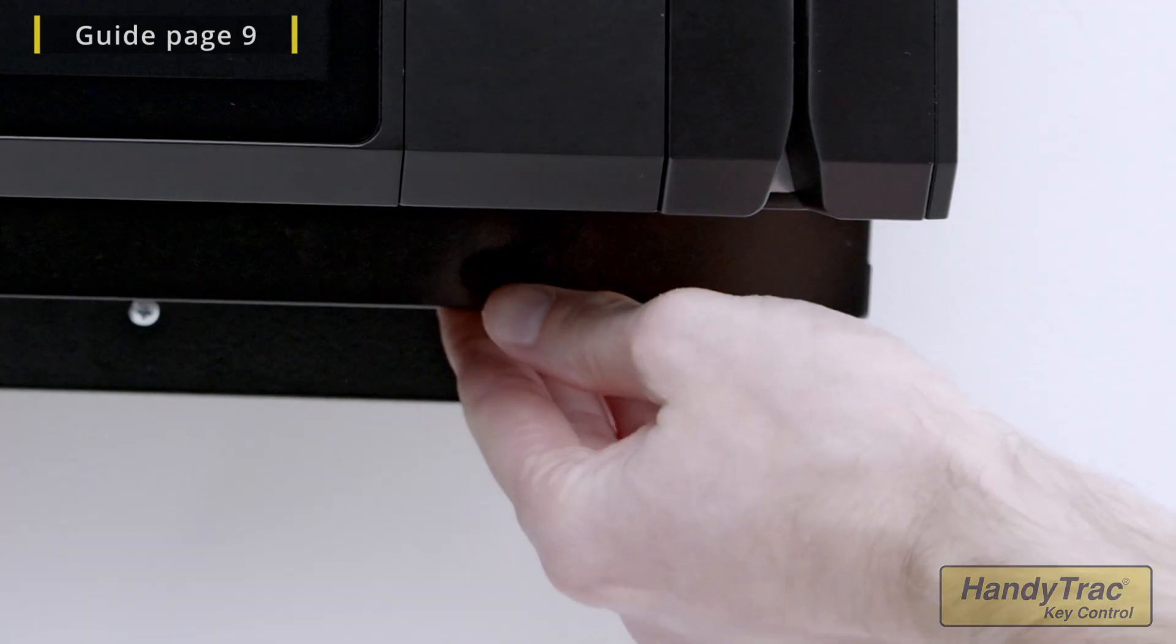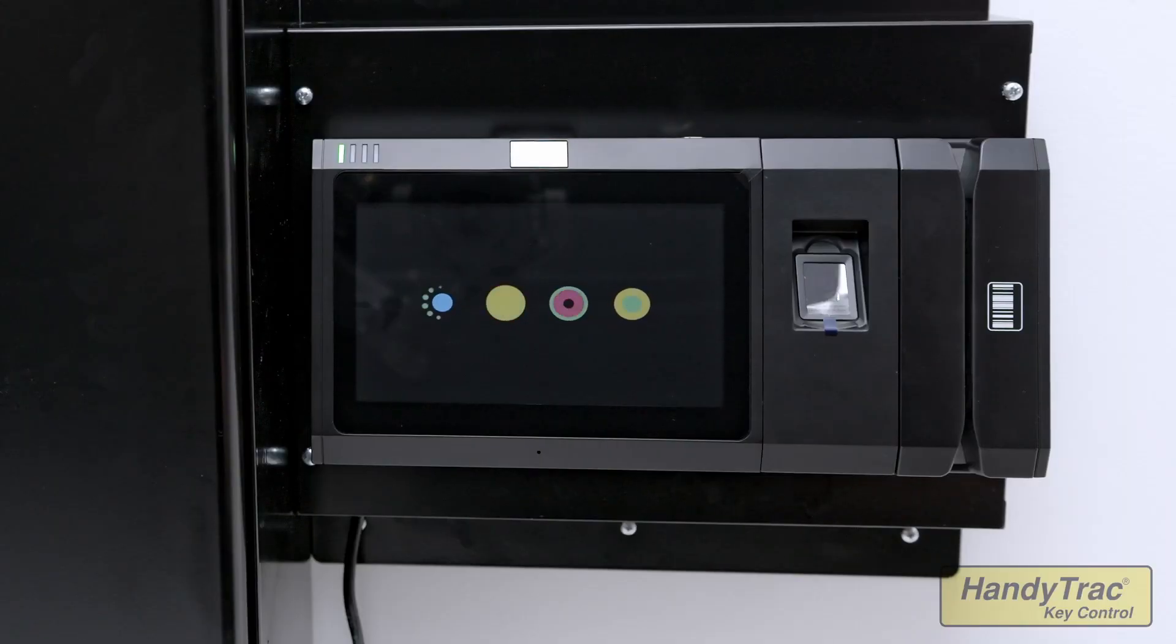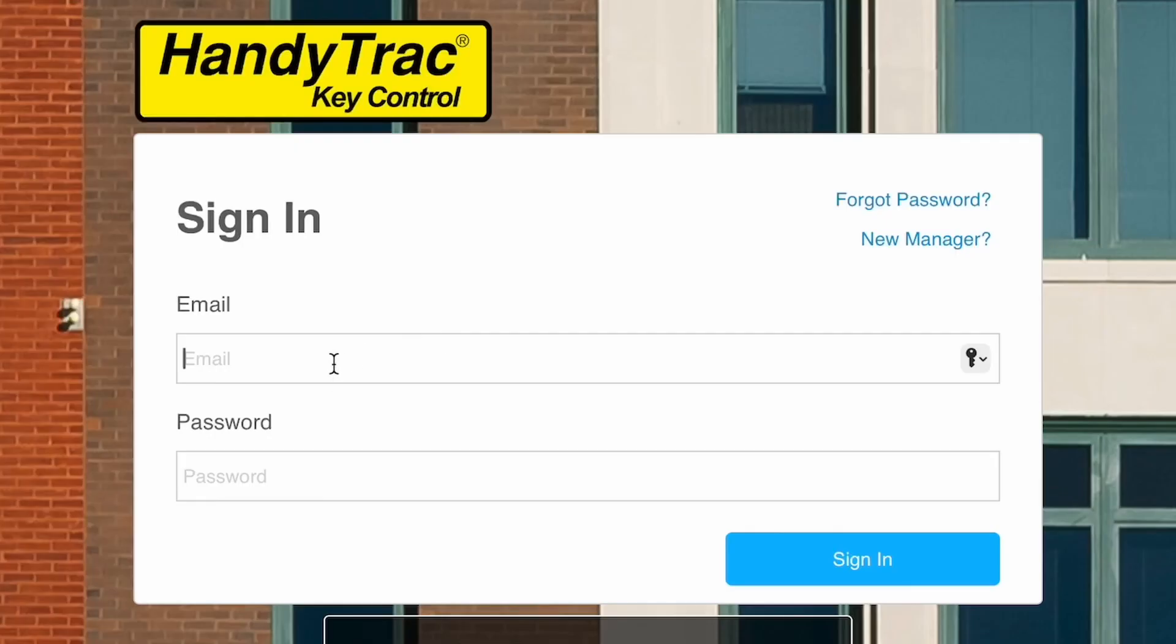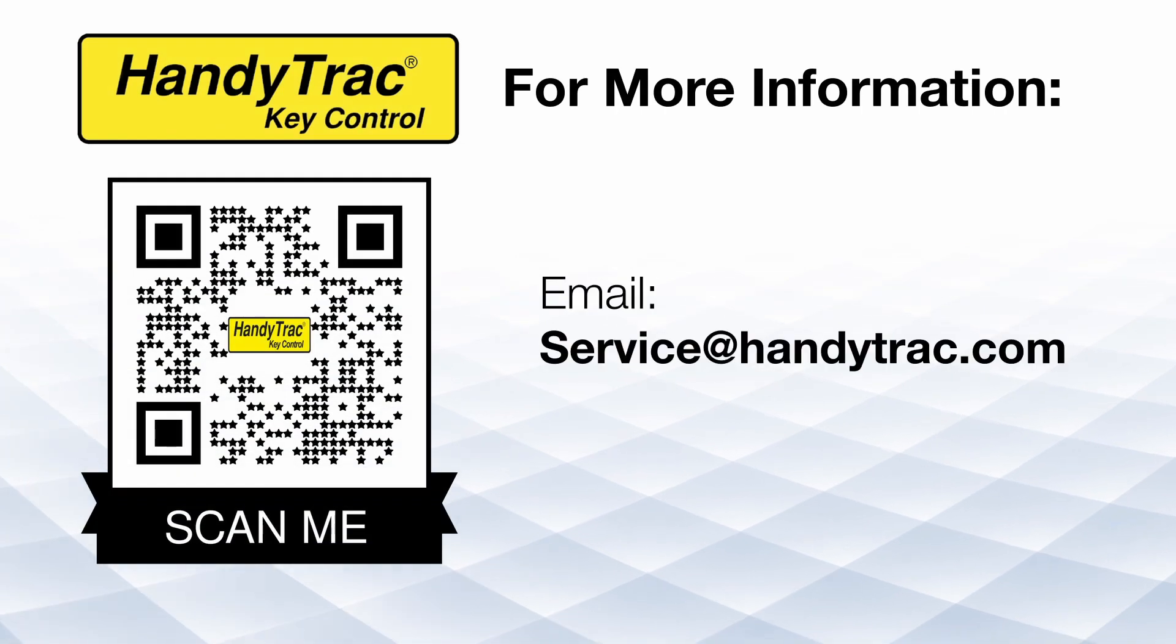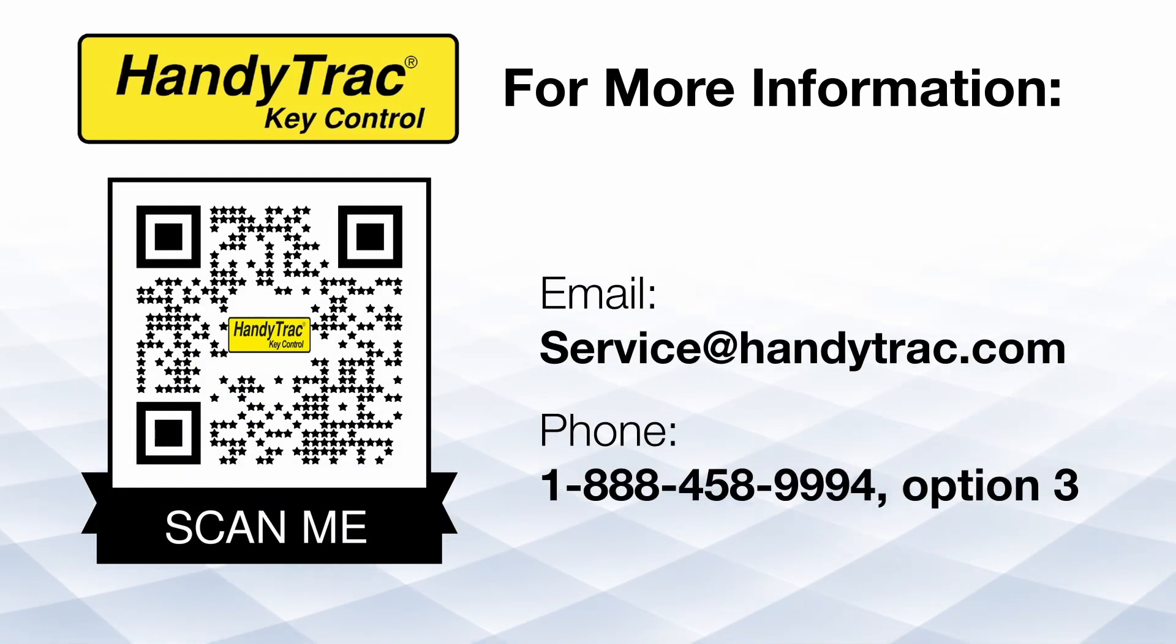Complete the installation by establishing communications and logging into your HandyTrack website portal. You can email service@handytrac.com or call 888-458-9994, option 3, to speak with a HandyTrack technician. A technician can create your account and answer any questions you may have about the new system setup process.